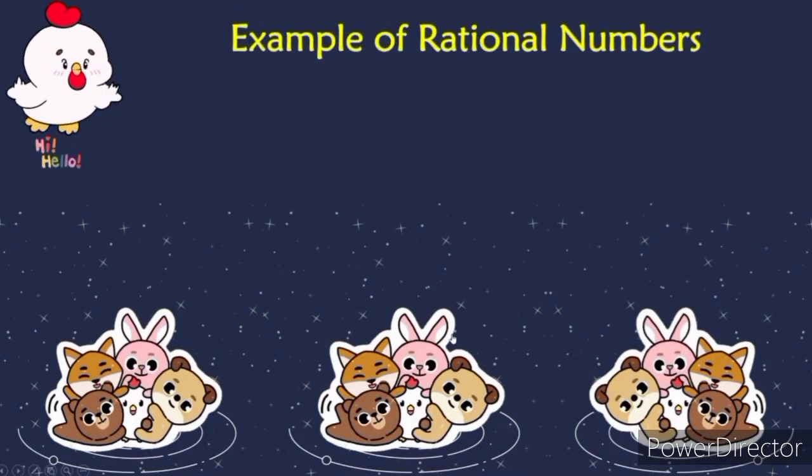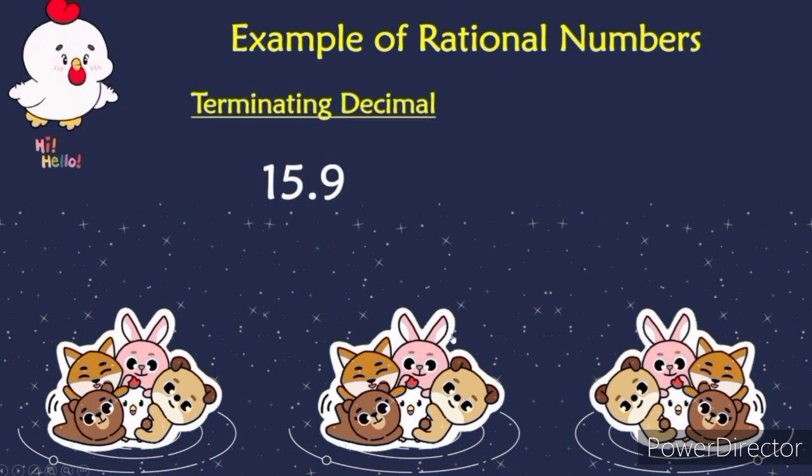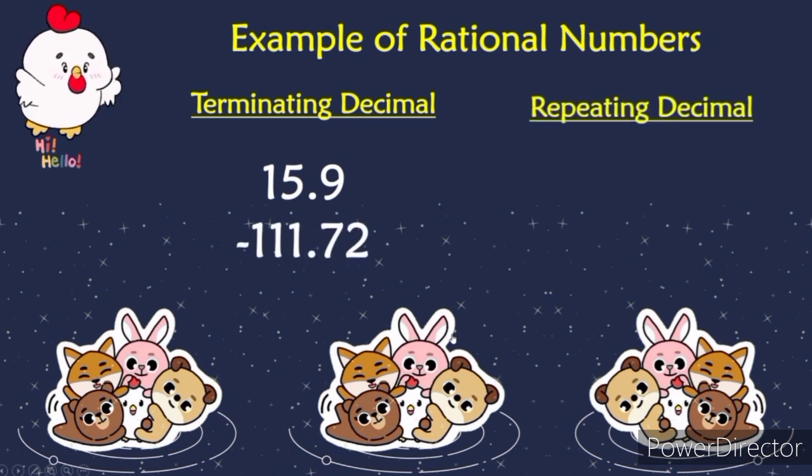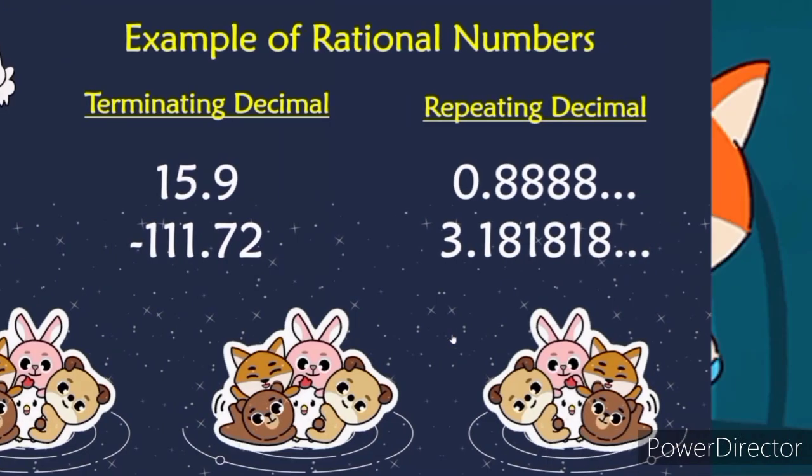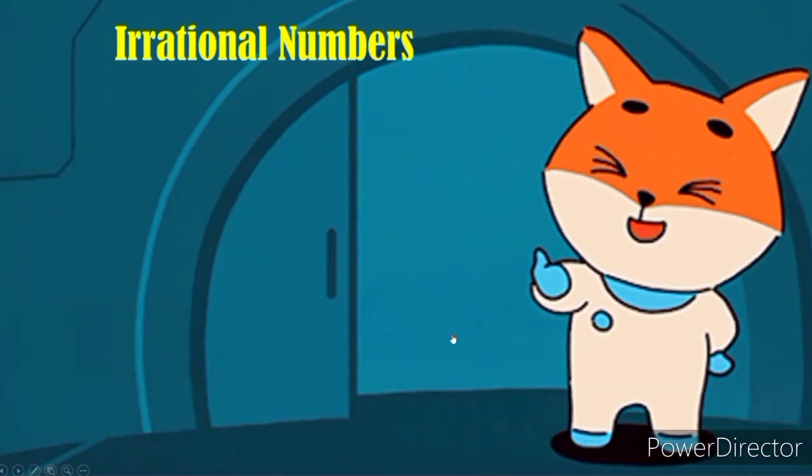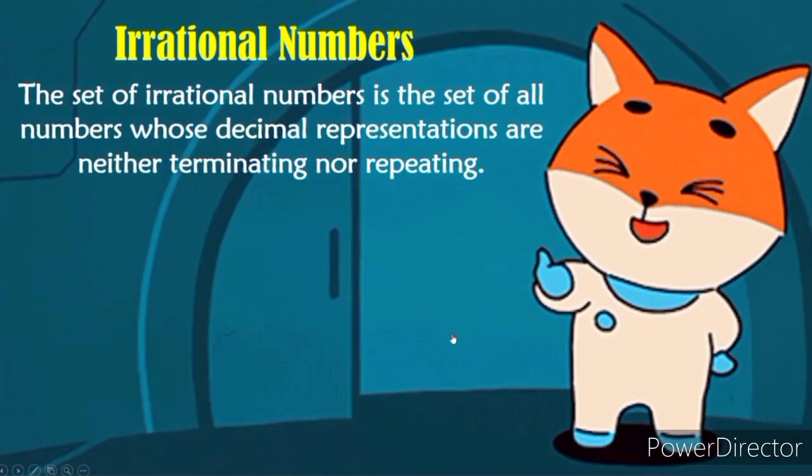Now let's have another example. First is for terminating decimal. We have 15.9 and negative 111.72. For repeating decimal we have 0.8888 and so on. And lastly, we have 3.18, 18, 18 and so on.